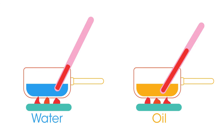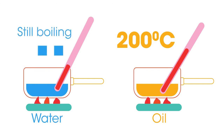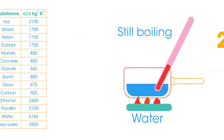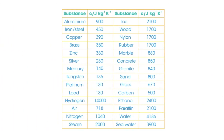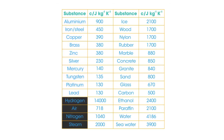As shown, when heated under identical conditions, the same mass of oil will heat up about twice as fast as water, reaching 200 degrees Celsius in the time it takes water to boil. You might want to pause the video to take in the data shown here, which shows the specific heat capacities of a range of substances. Notice how the value for metals gets lower as the atomic mass increases, and that materials made up of lighter elements have a much higher figure.